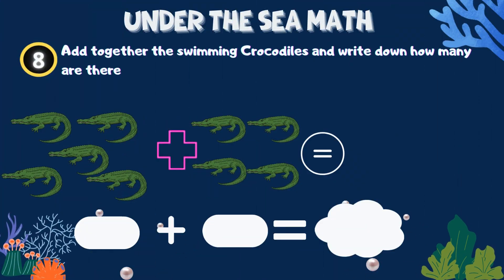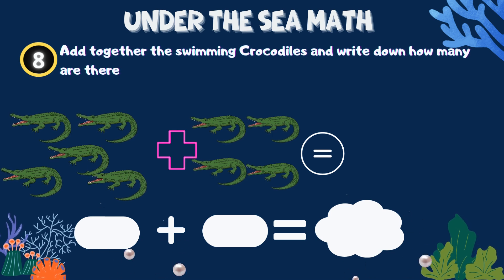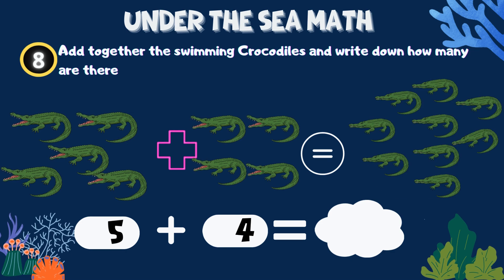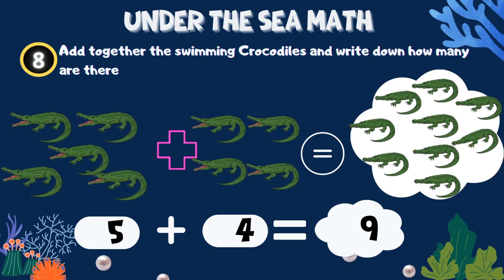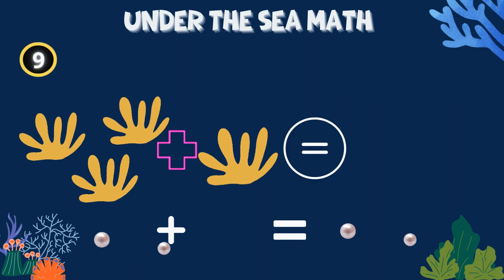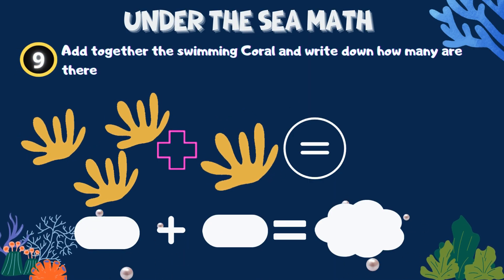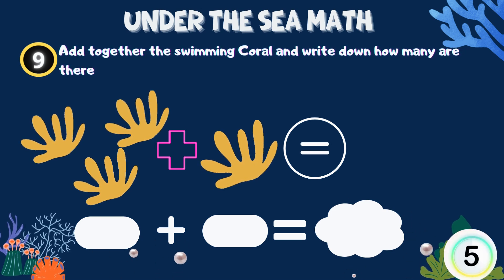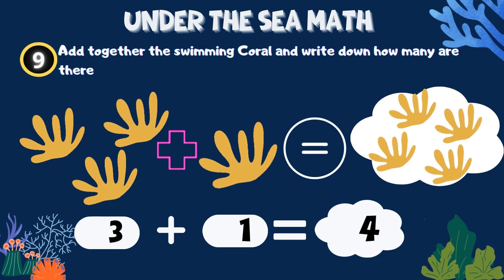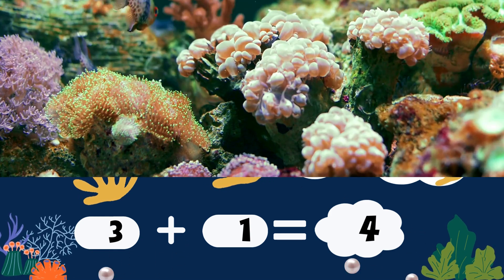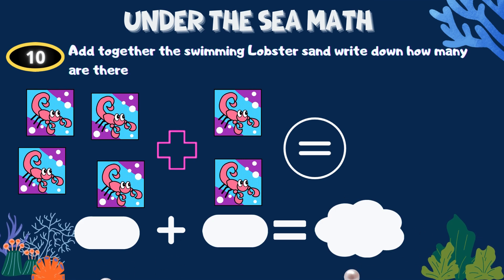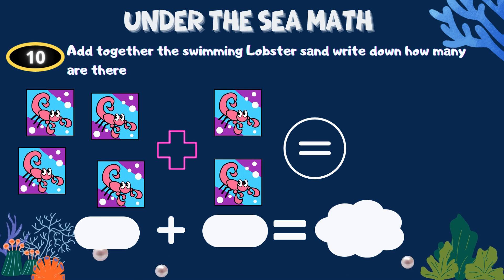Add together the swimming crocodiles and write down how many there are. Add together the swimming coral and write down how many there are. Add together the swimming lobsters and write down how many there are.